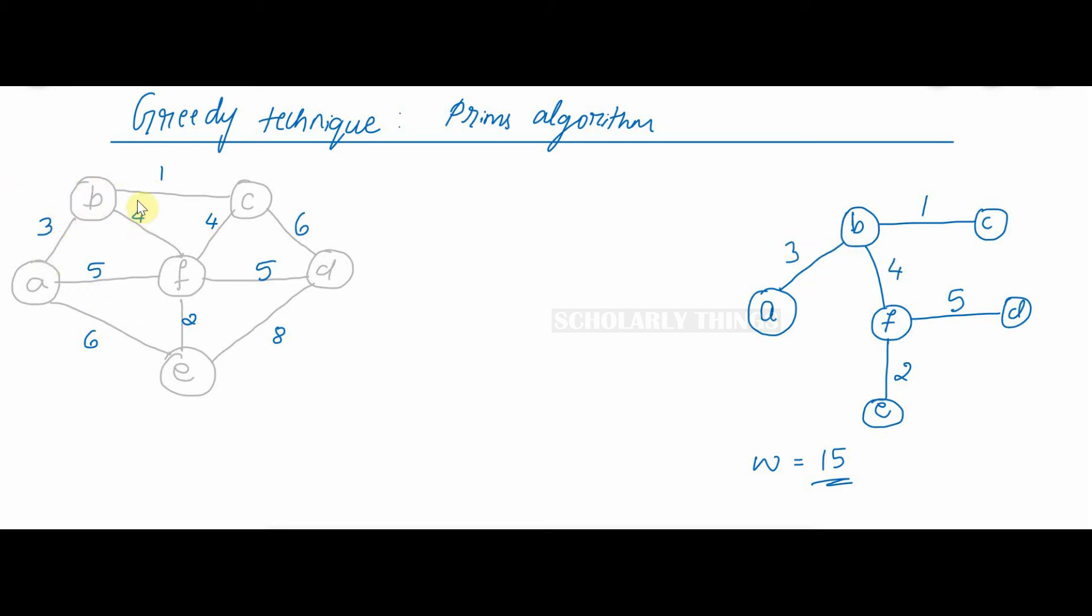Then from B the minimum edge was 1. B to C, 1. Then B to F, 4. Then F to E, 2. Then F to D, 5. We covered all the edges and we found that the weight of this minimum spanning tree is 15.